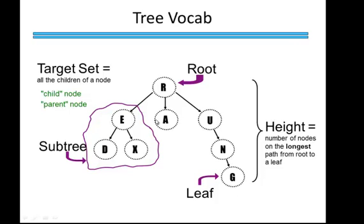This is not a binary tree. This root, R, has three children. A binary tree will only have zero, one, or two children.